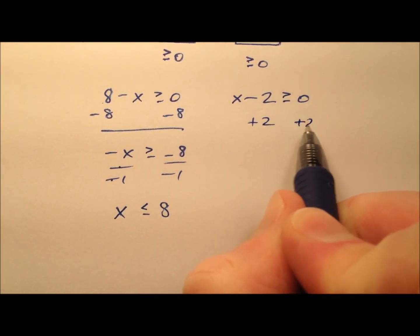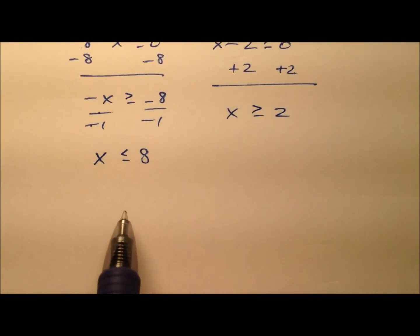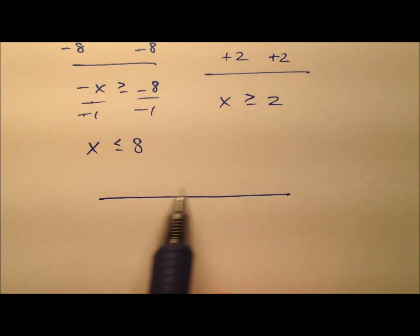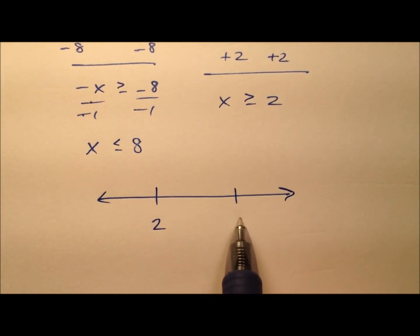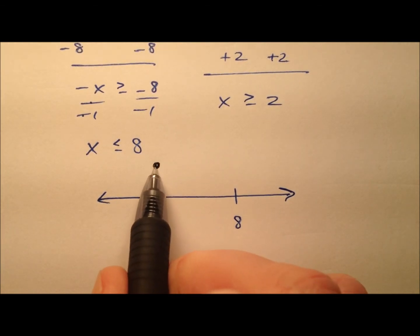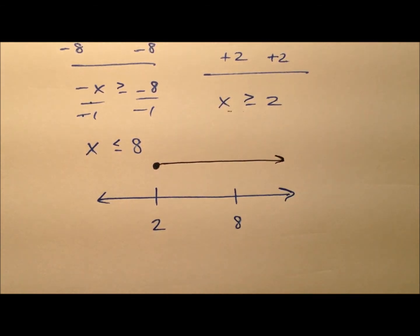And for this one over here, we'll add 2 and x is greater than or equal to 2. So let's go ahead and take a look at both of these on the same number line. And we have 2 down here and 8 right up here. And so we know it's going to be a closed circle at 2 for this one and moving to the right since it's greater than 2.